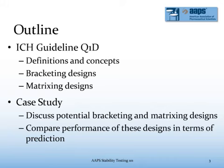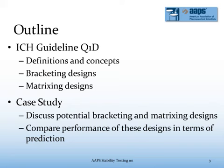As an outline for our discussion today, we will be discussing the ICH Q1D in detail. First we'll talk about some general definitions and concepts that are outlined in the guideline, and then we'll discuss bracketing and matrixing designs specifically. We'll talk about how these are designed and some risks and benefits of each. Then I'll discuss a case study where we looked at bracketing and matrixing designs here at Merck and how we compared the performance of these designs in terms of how well they predicted into the future and predicted for expiry.